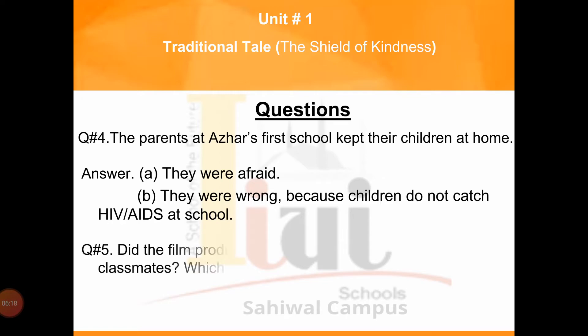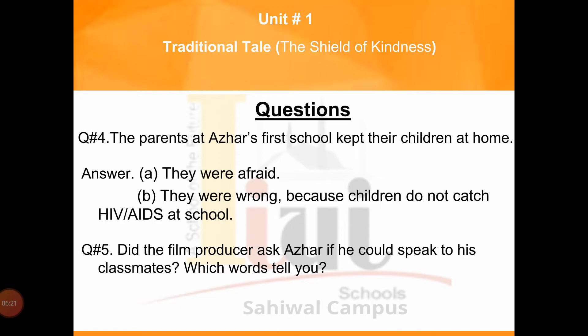Question number five: Did the film producer ask Azar if he could speak to his classmates? Which words tell you? The film producer talked to Azar's classmates about the disease with his permission. The text says 'with his permission,' which means the producer took permission from Azar. Write down the answers and questions in your notebook.